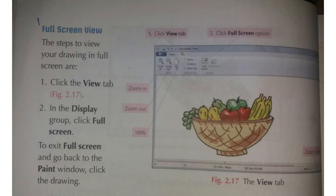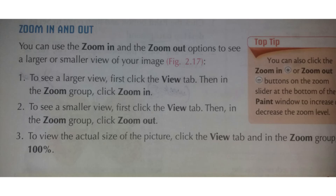Our next and last topic is zoom in and out. You can use the zoom in and zoom out options to see a larger or smaller view of your image. To see a larger view, step 1: click the View tab at the top. Step 2: go to the Zoom group, then click 'Zoom In.'